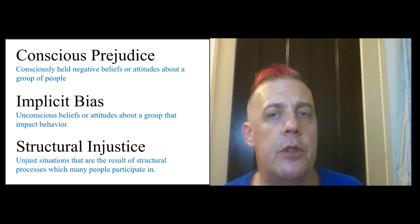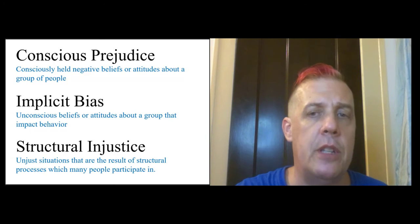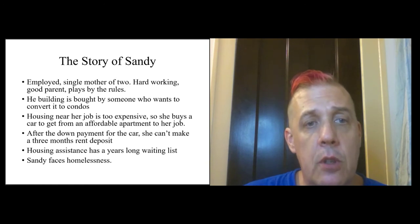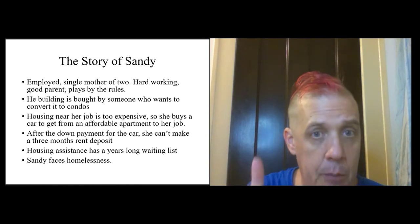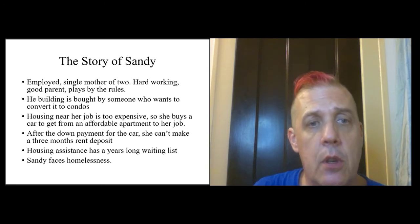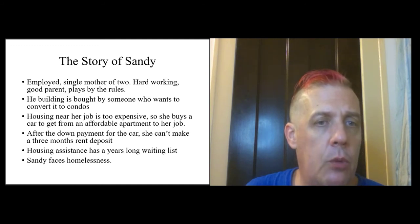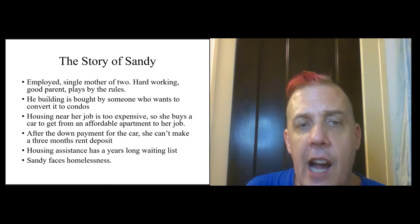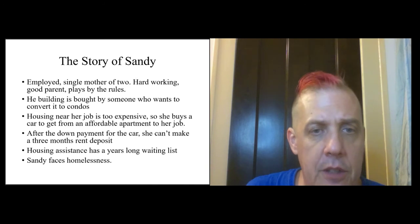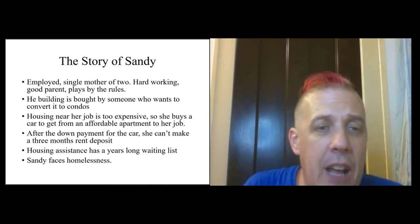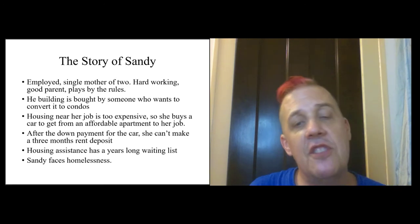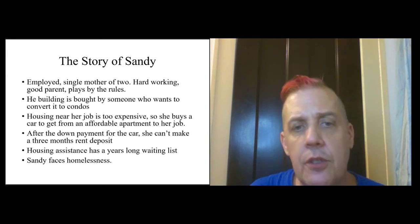Iris Marion Young introduces this by talking about a woman named Sandy. Sandy is employed, a single mother of two — hardworking, a good parent, she plays by the rules. Her building is bought by someone who wants to convert it to condos. Housing near her job is too expensive, so she buys a car to get to an affordable apartment. But after the down payment for the car, she can't afford to make the three months' rent deposit. Housing assistance has a years-long waiting list, and so she's facing homelessness.